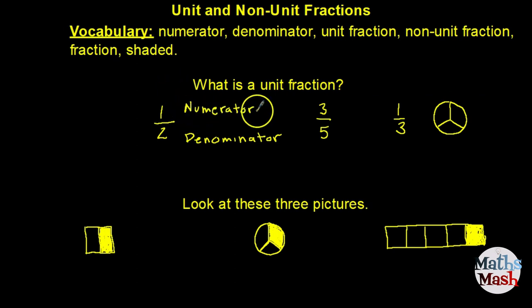As with all fractions, unit fractions have a numerator which is written on the top and a denominator which is written on the bottom. The difference between a unit fraction and a non-unit fraction is that a unit fraction has only one as the numerator.